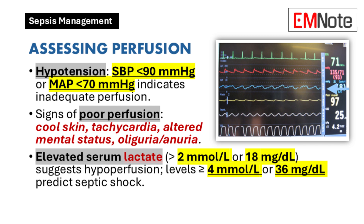Perfusion assessment is a critical part of managing sepsis. A systolic blood pressure below 90 mmHg or a mean arterial pressure below 70 mmHg indicates hypotension and inadequate perfusion. Clinicians should also look for signs such as cool, vasoconstricted skin, tachycardia, altered mental status, or reduced urine output. An arterial catheter may be inserted for continuous monitoring if necessary. Elevated serum lactate levels above 2 mmol/L suggest organ hypoperfusion, and levels at 4 mmol/L or higher are independent predictors of septic shock.